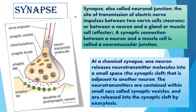What is a Synapse? Synapse, also called neuronal junction, is the site of transmission of electric nerve impulses between two nerve cells or neurons, or between a neuron and a gland or muscle cell. A synaptic connection between a neuron and a muscle cell is called a neuromuscular junction. In the diagram of synapse: the impulse is coming in; these are synaptic vesicles, these are mitochondria, this is the synaptic knob, this is the synaptic gap, this is the receptor site, and this is the neurotransmitter molecules within the synaptic vesicle.